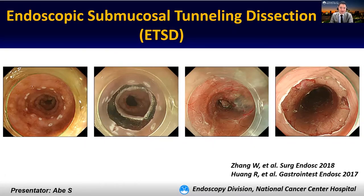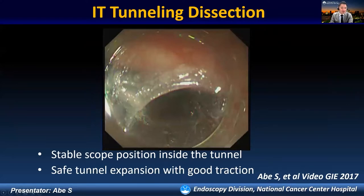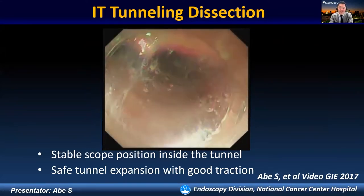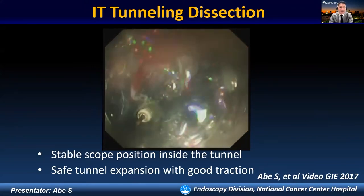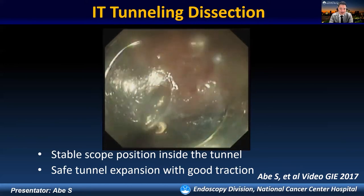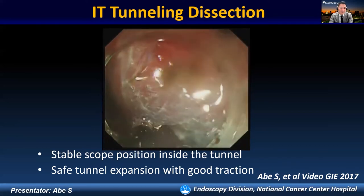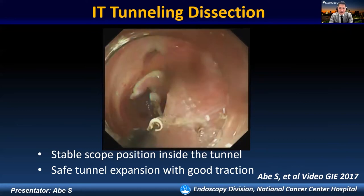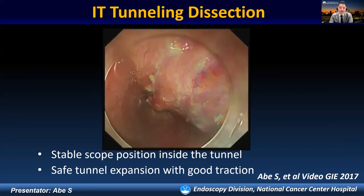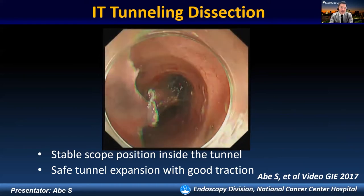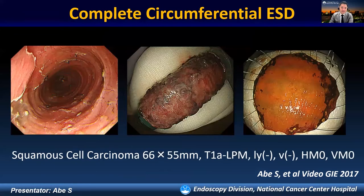Endoscopic submucosal tunneling dissection was developed and reported mainly from China. Similar to the POEM procedure, after entering into the submucosal space, the submucosal tunnel is extended distally with the backside electrode of the insulated tip while traction is maintained. After completing the tunnel creation, we dissect laterally on both sides, expanding the tunnel with good traction inside the tunnel. Even for circumferential lesions, we can perform en-bloc resection. Here you can see the syringe-shaped specimen, and opening the specimen reveals an en-bloc R0 resection.